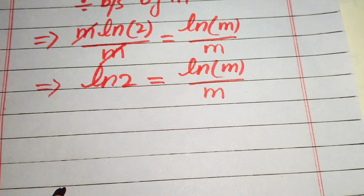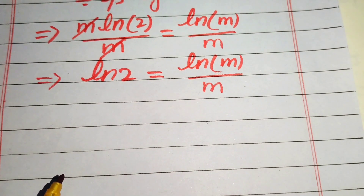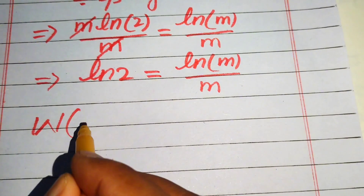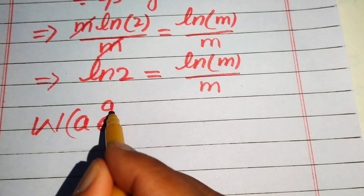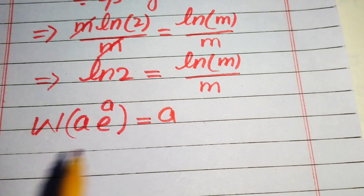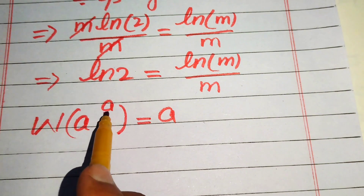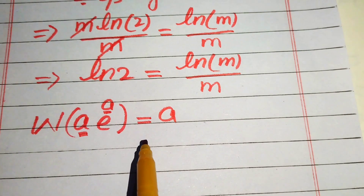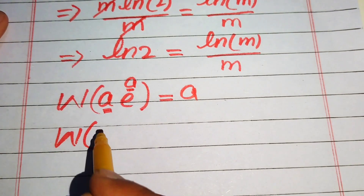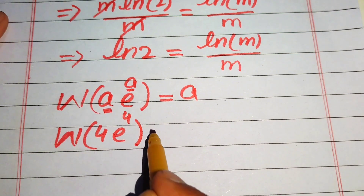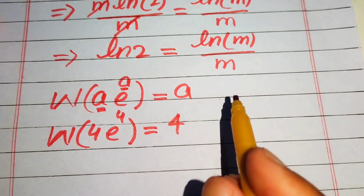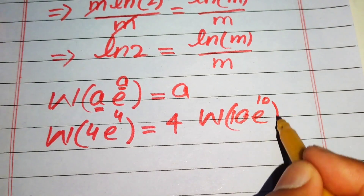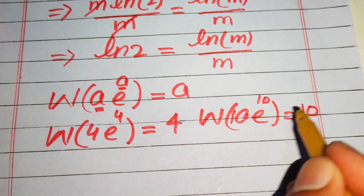Now to find the value of m we use the Lambert W function. The Lambert W function is stated as W of a times e to the power of a equals a — meaning if the exponent of e is multiplied by a, the output of the Lambert W function is that exponent. For example, W of 4·e^4 equals 4, and W of 10·e^10 equals 10.